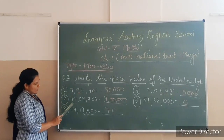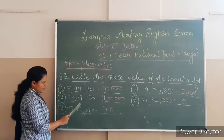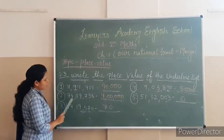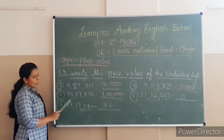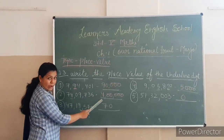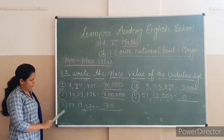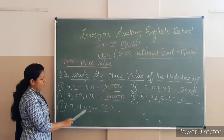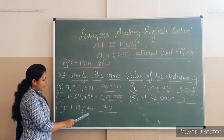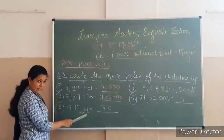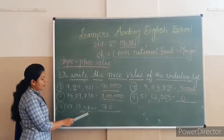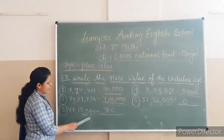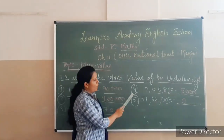Second, in 9,736, the 4 is in the units position, so 4 multiplied by 1 equals 4. And third, in 19,570, the underlined digit is 7 and it is in the position of the 10s, so multiplied by 10 gives 70.